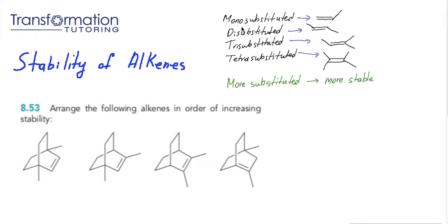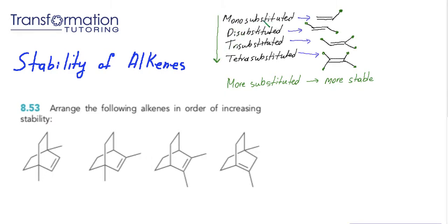I gave you examples for monosubstituted, disubstituted, trisubstituted, and tetrasubstituted alkenes. A monosubstituted alkene is a double bond directly attached to only one carbon. A disubstituted alkene is attached to two carbons, trisubstituted to three carbons, and tetrasubstituted to four carbons. In order of stability, tetrasubstituted is most stable and monosubstituted is least stable.